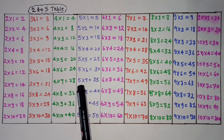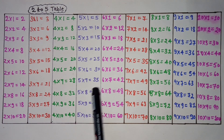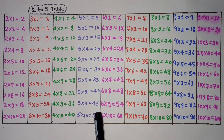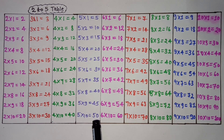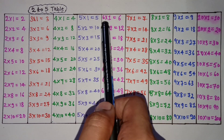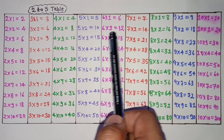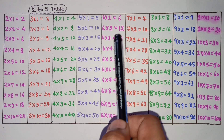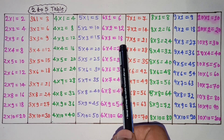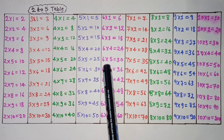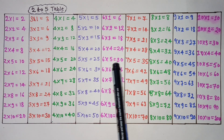5 7 is 35, 5 8 is 35, 5 9 is 44, 5 10 is 50. 6 1 is 6, 6 2 is 12, 6 3 is 18, 6 4 is 24, 6 5 is 30.